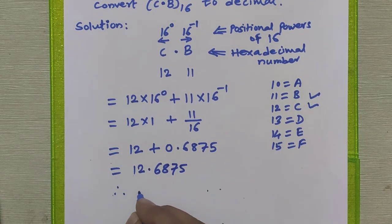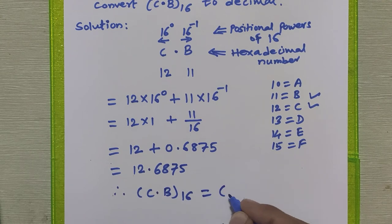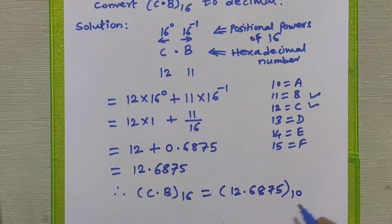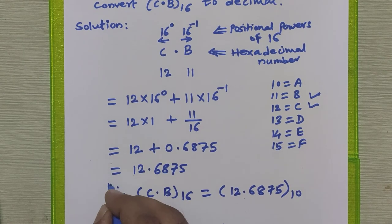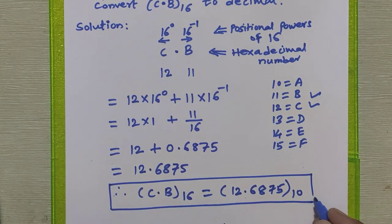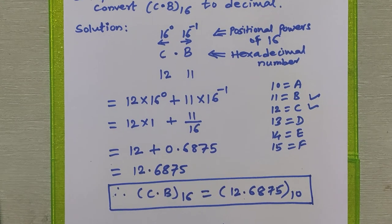The final answer is 12.6875. So we can say that C point B in hexadecimal is equal to 12.6875 in decimal. This is how we can convert any hexadecimal number to a decimal number.